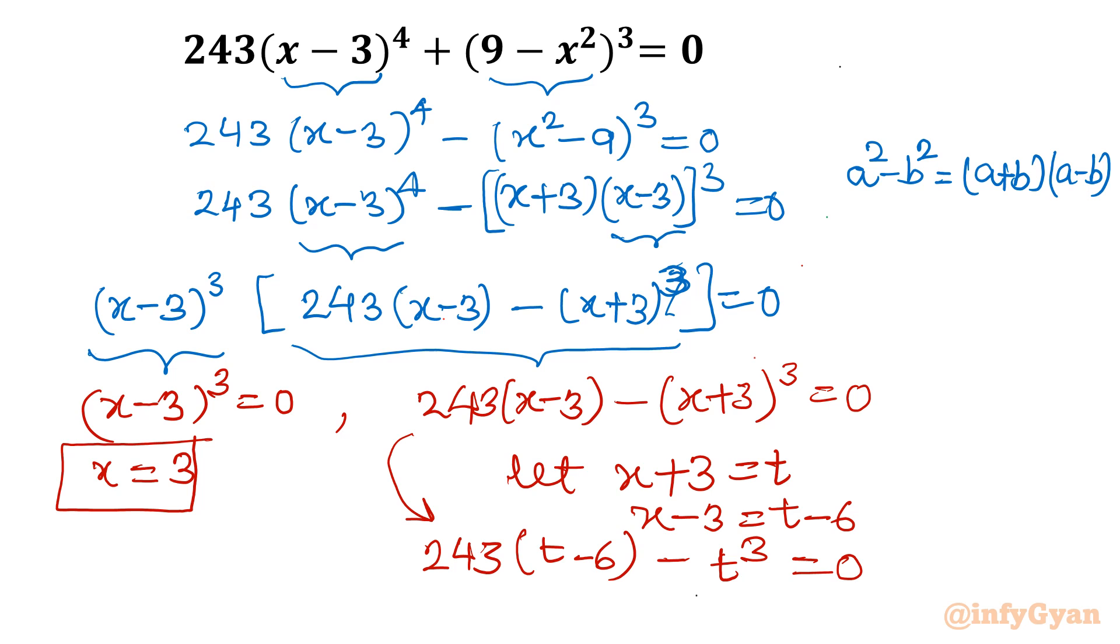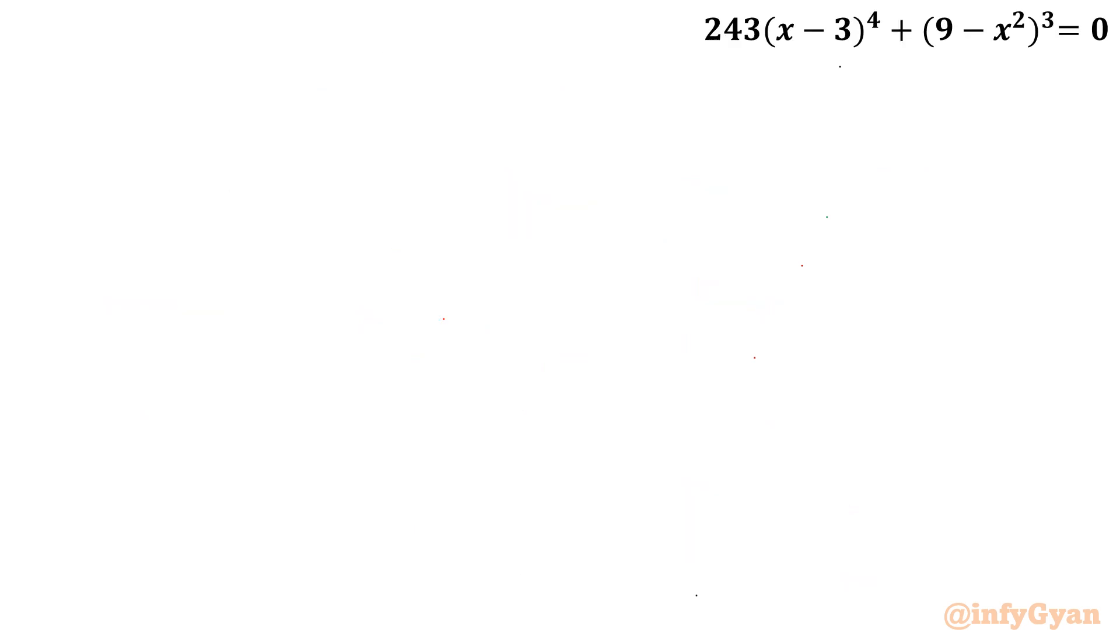Now we have equation t³ minus 243t plus 1458 equal to 0. That cubic equation will give us this way. Now I will use rational root theorem. So you can find out the eligible factors plus minus 1, plus minus 2, plus minus 3 and so on.